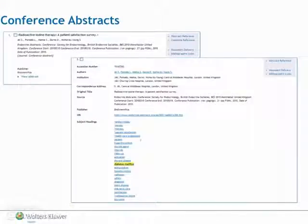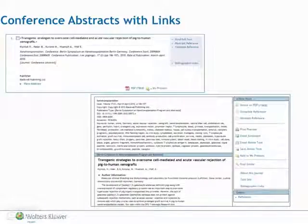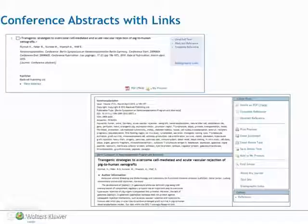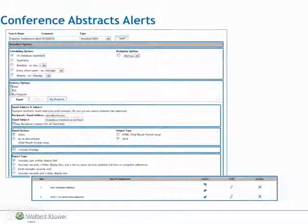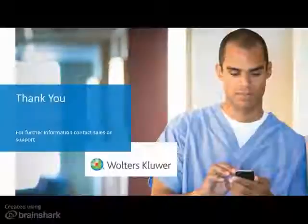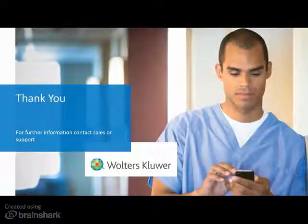The Conference Abstract record and the beginning of the complete reference show why we see this result. If the conference material is published in a journal, you will be able to link to it either within journals at Ovid or via any other links. Digital object identifiers are available for many records if required. You can also create alerts for Conference Abstracts to keep up to date with publications in a particular location or about a particular subject. Thank you for viewing our short presentation.